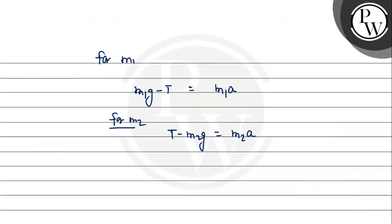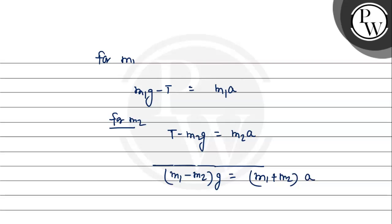Adding the two equations, T cancels out, giving: m1 − m2 multiplied by g equals (m1 + m2) multiplied by a. Therefore, a = (m1 − m2)/(m1 + m2) × g.